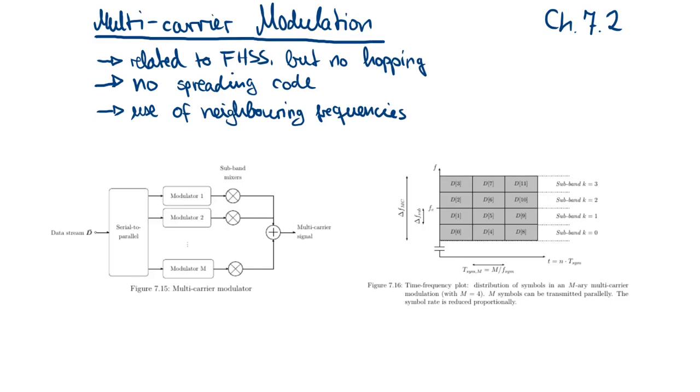The next spread spectrum method is a bit different from the three spread spectrum methods which we had learned about in the past videos. Here we are going to talk about multi-carrier modulation. It is somewhat related to frequency hopping spread spectrum, but it does not implement a hopping scheme.